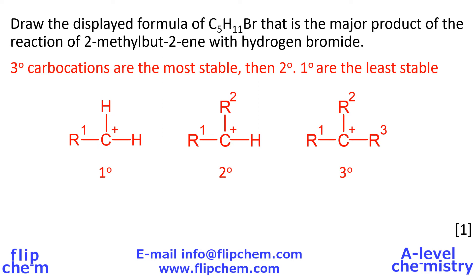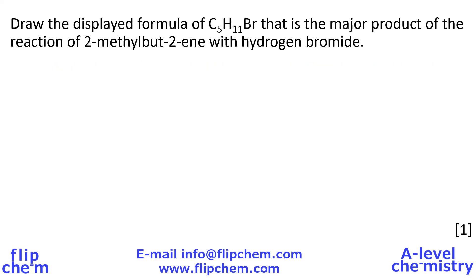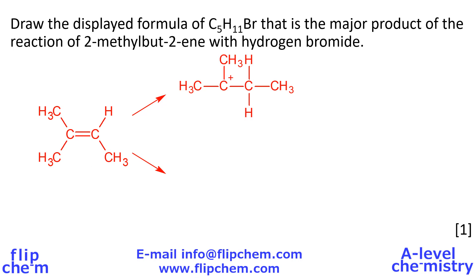Drawing out 2-methylbutene, the carbon-carbon double bond is the focus. The carbon on the left of the double bond is attached to two methyl groups, and the one on the right is attached to a methyl and a hydrogen — making it an asymmetrical alkene. In the first step, the hydrogen adds to one of those carbons. If it bonds to the right, it leaves the C+ on the left; if it bonds to the left, it leaves the C+ on the right. So there are two possible carbocation intermediates. In the second stage, the bromide ion attacks the C+.